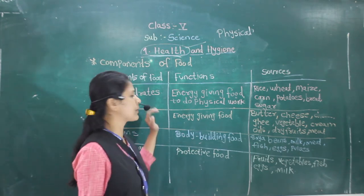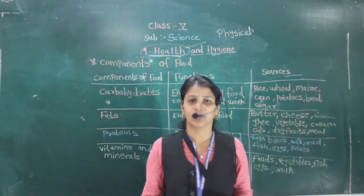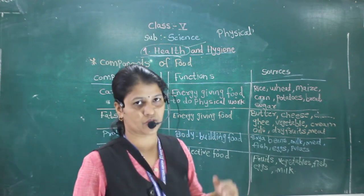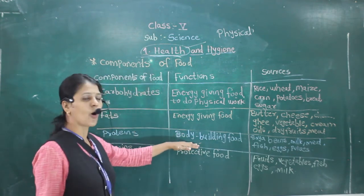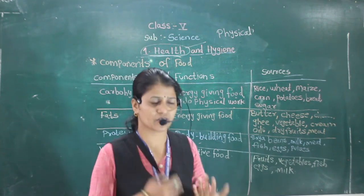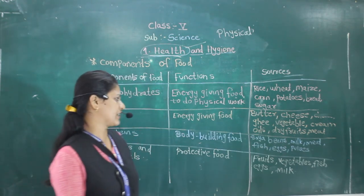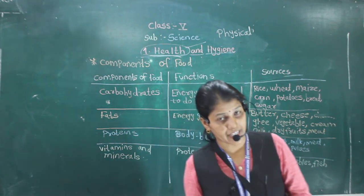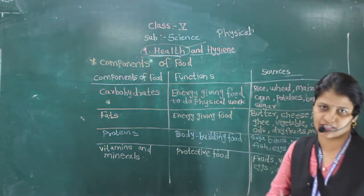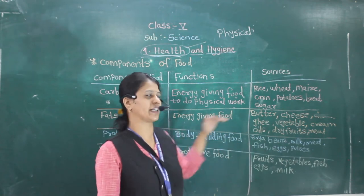The next component of food is protein. Protein is very important for growing children. It is also called a body-building food. It helps to repair worn-out tissues in your body. The sources of protein are soybean, milk, meat, fish, egg, and pulses. We get protein from these food items.